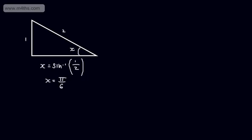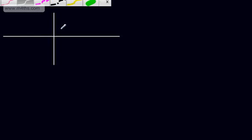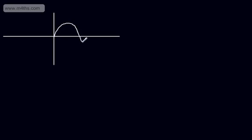Why did I choose pi by 6 and not 5 pi by 6, or some multiple? Let's go back to our definition of an inverse function. For a function to have an inverse, it must be 1 to 1. Let's sketch the sine curve. We can see it has a maximum of 1 at pi by 2, returns to the x-axis at pi, comes to a minimum, and back up to 2 pi. This is clearly not a 1 to 1 function.